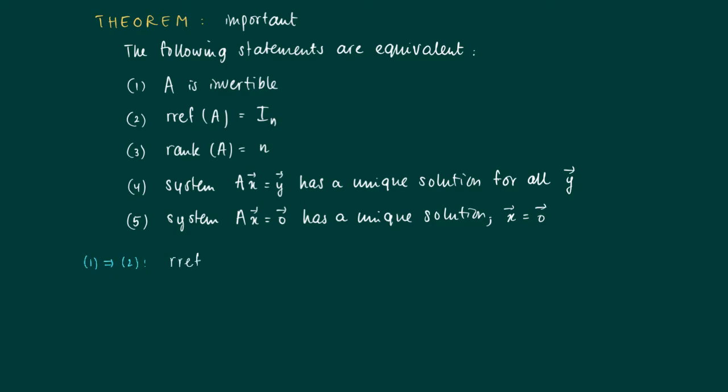We know that the reduced row echelon form of the combined matrix A together with the identity matrix equals the identity matrix together with the inverse matrix. So the reduced row echelon form of A, which we get by the same operations, the same Gauss-Jordan elimination steps, is also equal to the identity matrix.